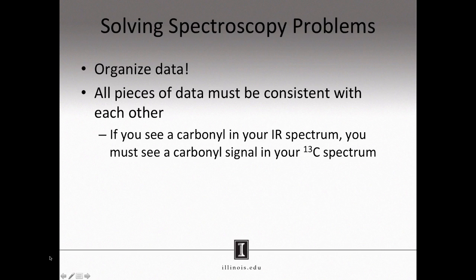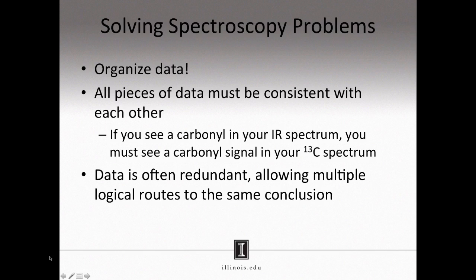For example, if you see a carbonyl stretch in your infrared spectrum, you must also see a carbonyl signal in your carbon-13 spectrum. Remember, solving spectroscopy problems is very much like diagnosing a medical condition. You are taking disparate pieces of information and must come to a conclusion that is consistent with all those pieces of information. Fortunately, some of the data you collect will be redundant, meaning often there is no one correct way to solve a spectroscopy problem. It is entirely possible you can come to the same conclusion as the person next to you using a different logical route, where both routes are equally valid.